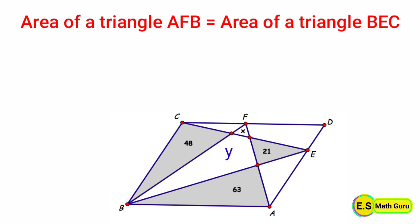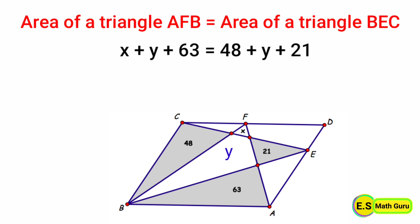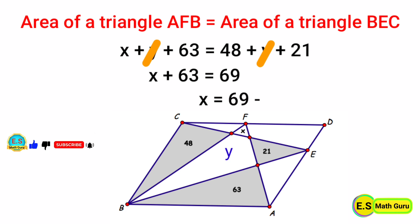By equating these two areas, we get X plus Y plus 63 is equal to 48 plus Y plus 21. Let us simplify by cancelling the Y term from both sides. Then it remains X plus 63 is equal to 69. Transposing 63 from the left-hand side to the right-hand side, we get X equal to 69 minus 63. Therefore, the value of X is equal to 6.